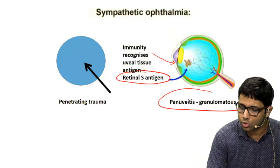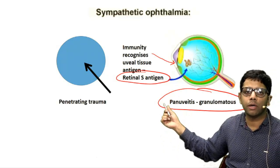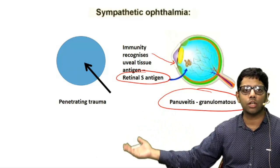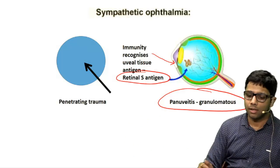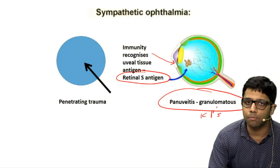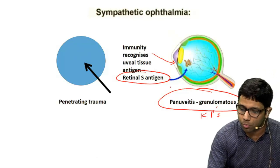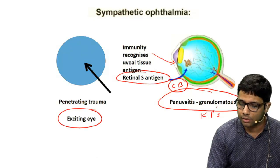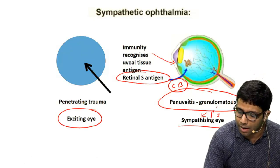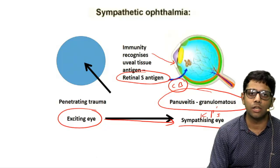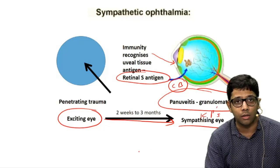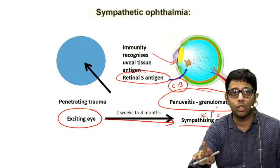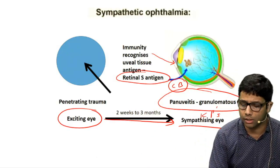The immunity of the body acts against the uveal tissue of the other eye, causing pan uveitis. There were cells in the anterior chamber indicating pan uveitis, and the posterior choroid had infiltrates. Mutton-fat keratic precipitates may be seen in granulomatous disorders. This is the exciting eye; the other becomes the sympathizing eye. The maximum chance of the sympathizing eye occurring is between two weeks to three months — 65% of cases — which matches this patient presenting at two months.